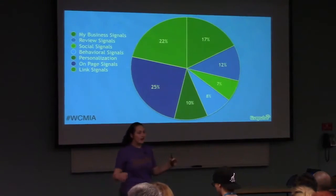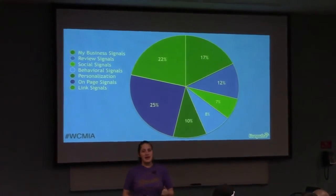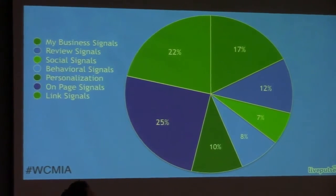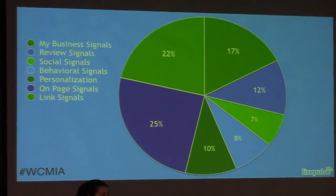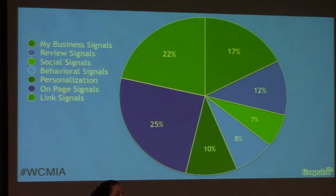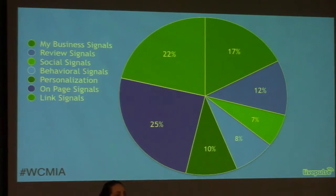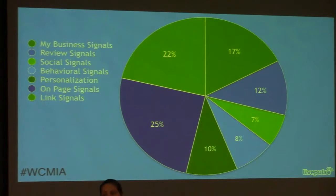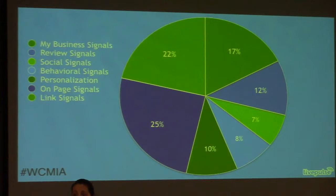Here is how SEO as a whole for local businesses is comprised. On-page signals make up 25%, but that's only a quarter of how you're found online. Links account for another 22%. Everything else is locally based. Looking at the pie graph, over 50% of your traffic is going to come from something locally based. Yes, you need a base of standard SEO on your website, but if you have a physical location, you have to do local SEO. You will fail if you don't.